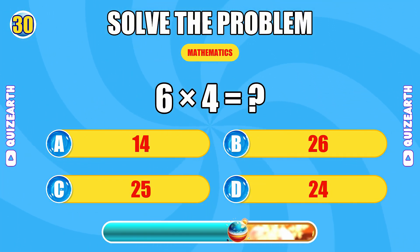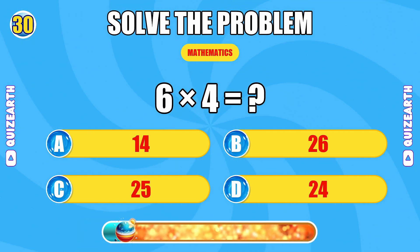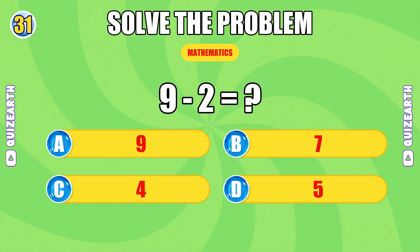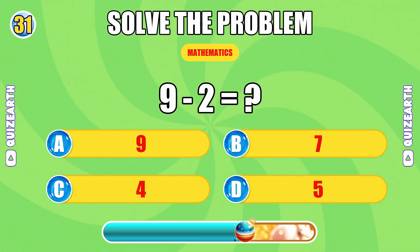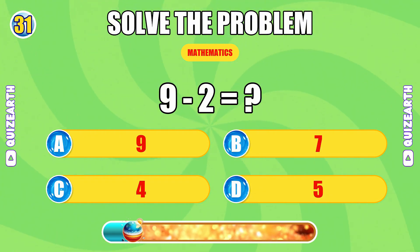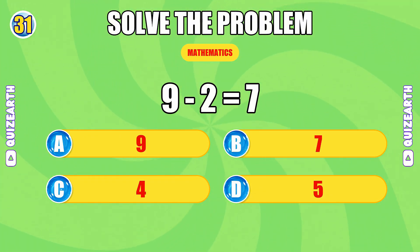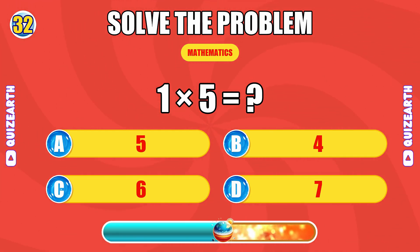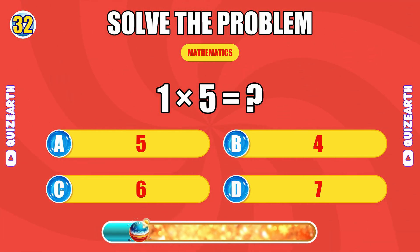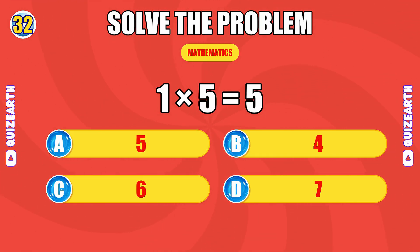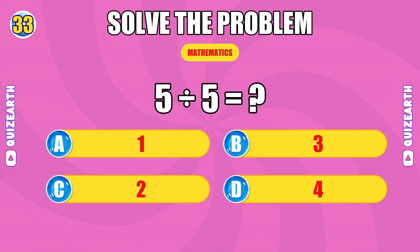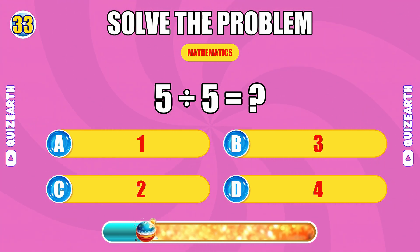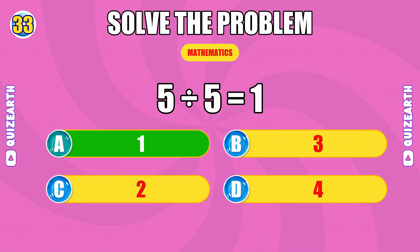What do you get when you subtract three from nine? What do you get when you divide five? You're unstoppable — legendary speed — the answer is one.